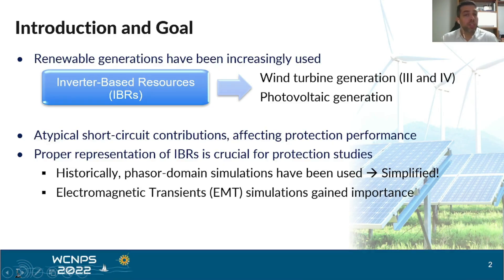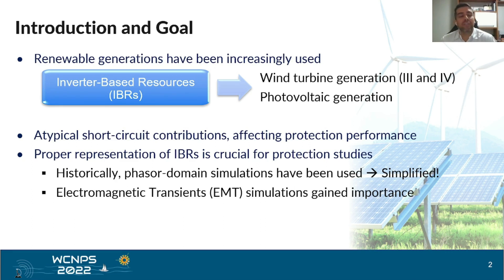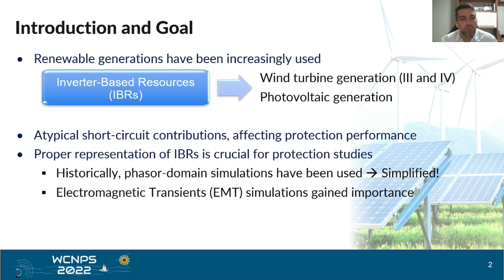It is well known that renewable generations have been increasingly used. In this context, Inverter-Based Resources, called here as IBRs, such as wind turbine generations of Type 3 and 4 and Photovoltaic Generations, stand out because they have resulted in atypical short-circuit contributions, and this atypical behavior has affected the protection performance. Thus, there are several professionals interested in properly representing IBRs for protection studies purposes.